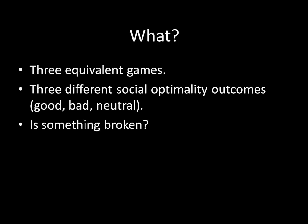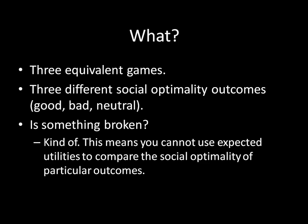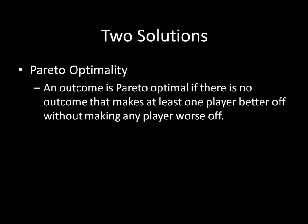So you might be wondering: is something broken here? Kind of. The basic issue is that we can't use expected utilities to compare the social optimality of particular outcomes in this manner — we can't just add things up and hope to get something sensible out of that. As a result, we have to use other social optimality functions to make these sorts of comparisons. One of them is called Pareto optimality. An outcome is Pareto optimal if there is no outcome that makes at least one player better off without making any player worse off. We can also call this Pareto efficiency; if an outcome is not Pareto optimal, it's Pareto inefficient.